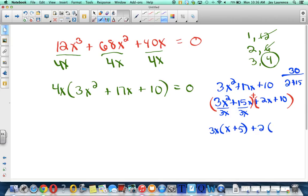And here, I'm going to factor out a 2, right? And get 2 times the quantity of x plus 5. And then I'm going to have the quantity of x plus 5 and the quantity of 3x plus 2. All right, so I have this 4x times the quantity of x plus 5 times the quantity of 3x plus 2.